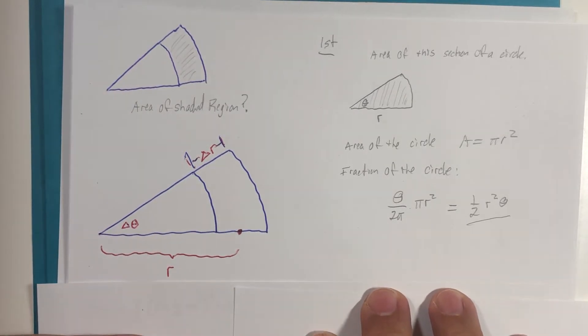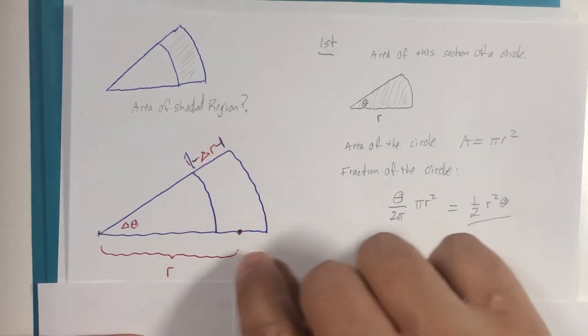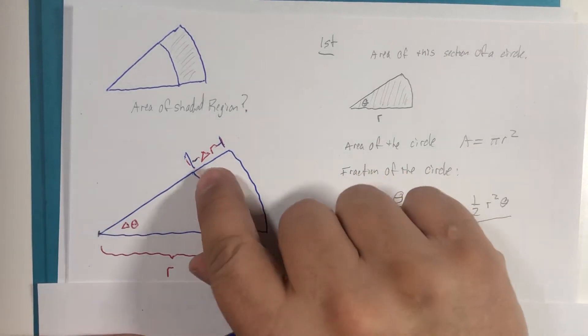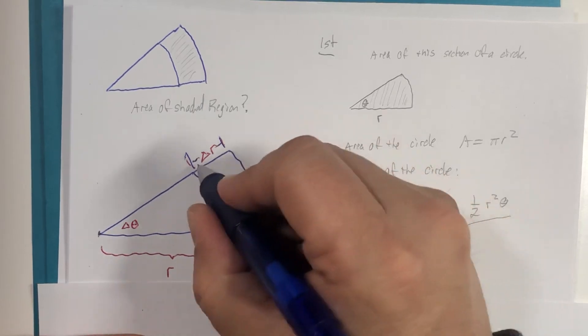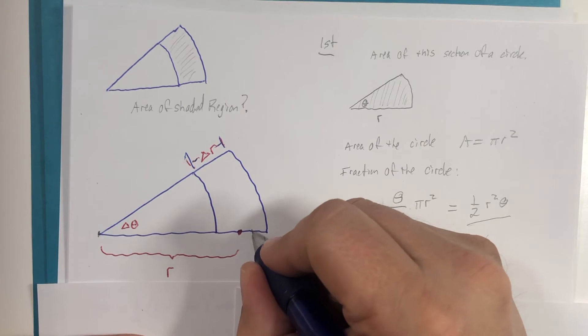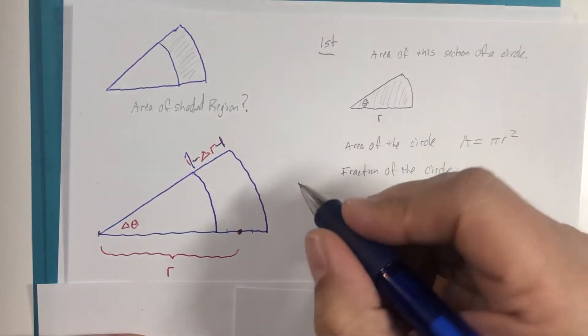I'm going to establish that this slice here has a radius from the origin to a point halfway between here and here, and we're going to call that distance Δr, the change in radius. So this would be half of the Δr and this would also be half of the Δr.